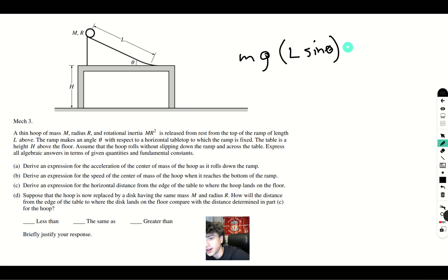And then you have 1 half M V squared, which is the translational kinetic energy, and 1 half I omega squared, which is your rotational kinetic energy.